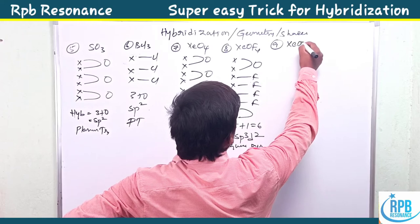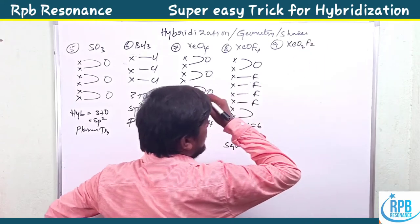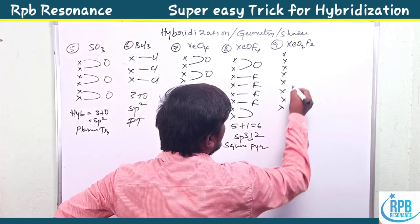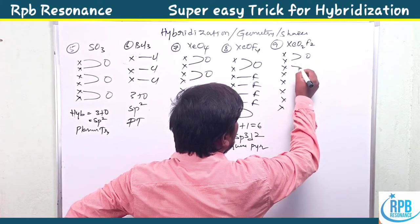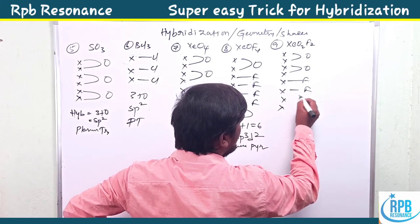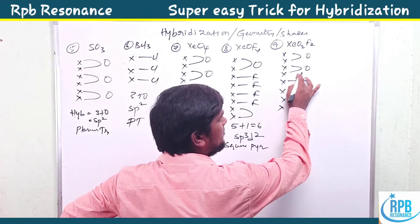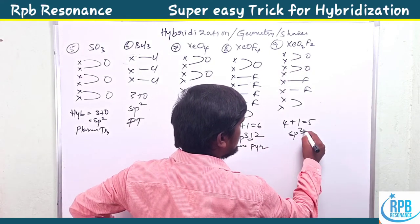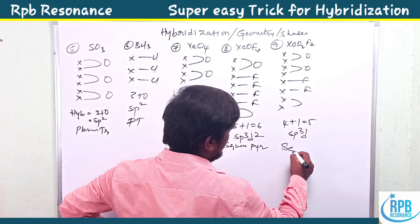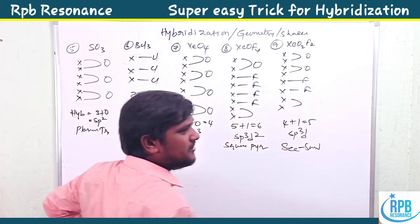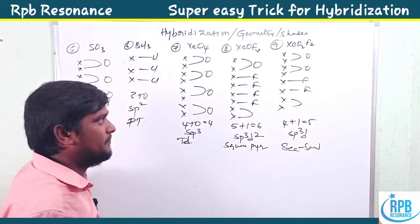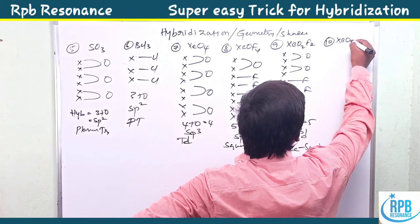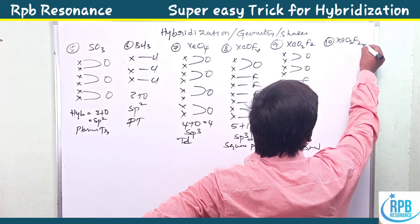For XeO2F2, xenon's group number is eight. With two oxygens and two fluorines bonded, the remaining two electrons form one lone pair. Four sigma bonds plus one lone pair: four plus one equals five — sp3d hybridization, and the shape is seesaw, but the geometry is trigonal bipyramidal.